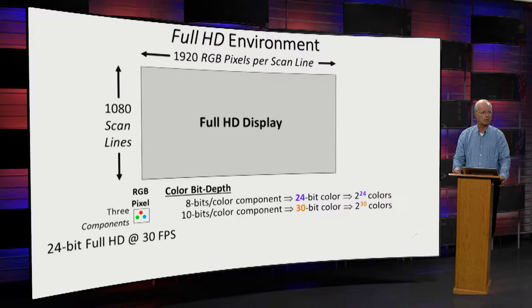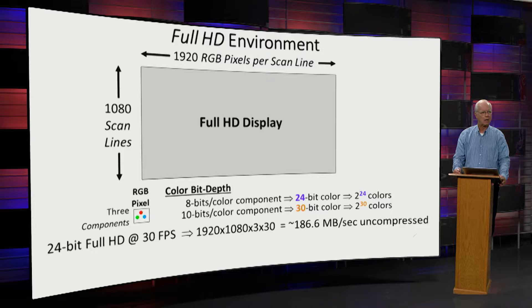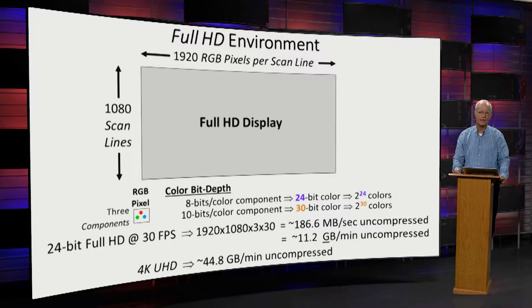At 24-bit full HD streaming at 30 frames per second — 1920 times 1080 by 3 by 30 — that is approximately 187 megabytes per second of uncompressed raw data. In a minute, it's 11.2 gigabytes, which is pretty significant. If it's 4K, which is four times the size, that's 44.8 gigabytes per minute uncompressed, and in an hour, 2.69 terabytes. In a word, we're talking about lots and lots of raw data.